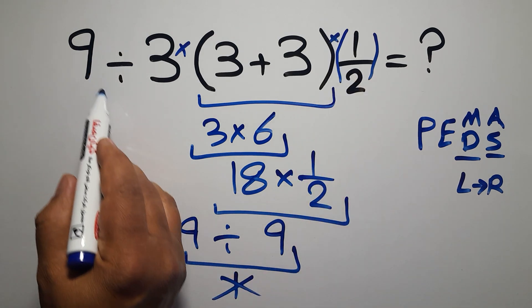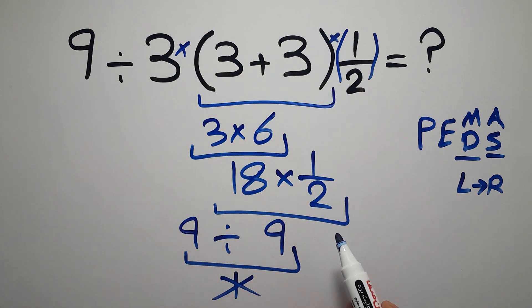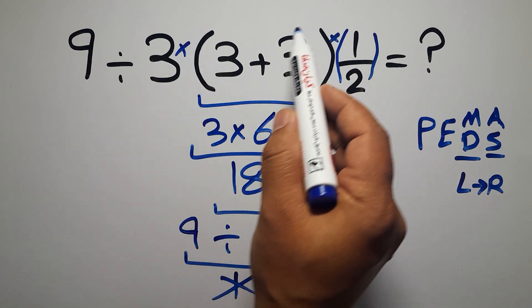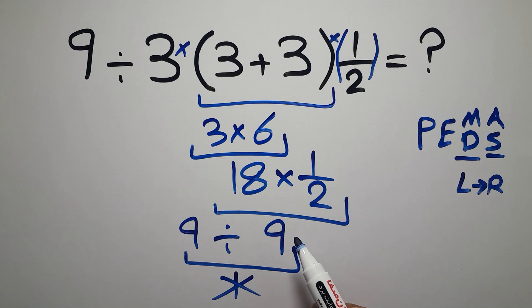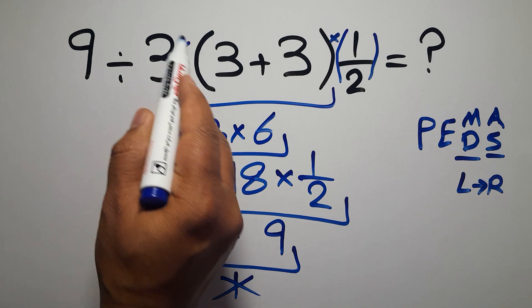So, we have one division, two multiplications, and one parentheses. First, we have to do this parentheses, and after this parentheses, we must do this division, not this multiplication.